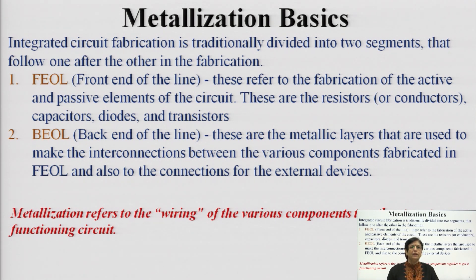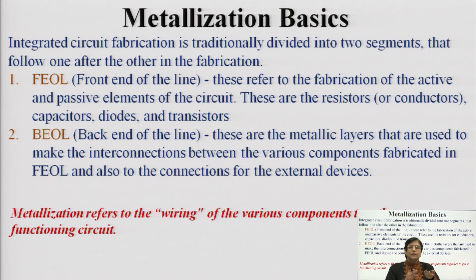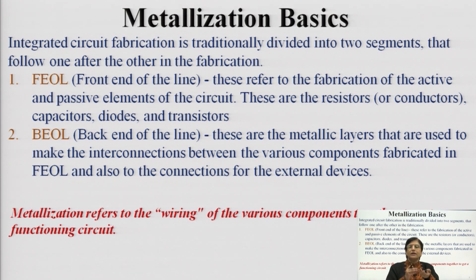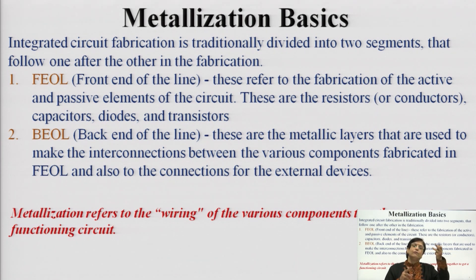This overall process is divided into two categories. One is the front end of line, which refers to the fabrication of active and passive elements, including resistors, capacitors, diodes, and transistors — defining the components that give desirable properties as part of the circuit. The second type is the back end of line, which comprises metallic layers used as interconnects between the various components fabricated in the front end.